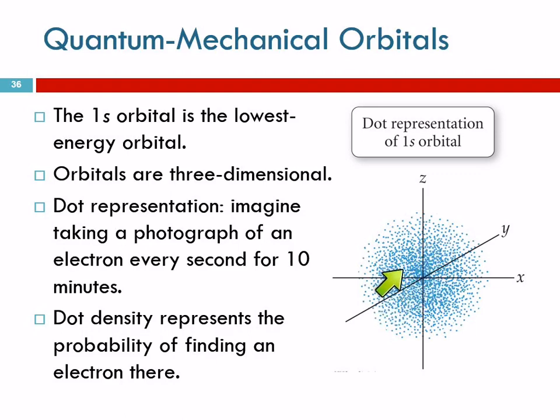So we see that most of the time the electron's going to be within this area. So the density of the dot reflects the probability of finding the electron.